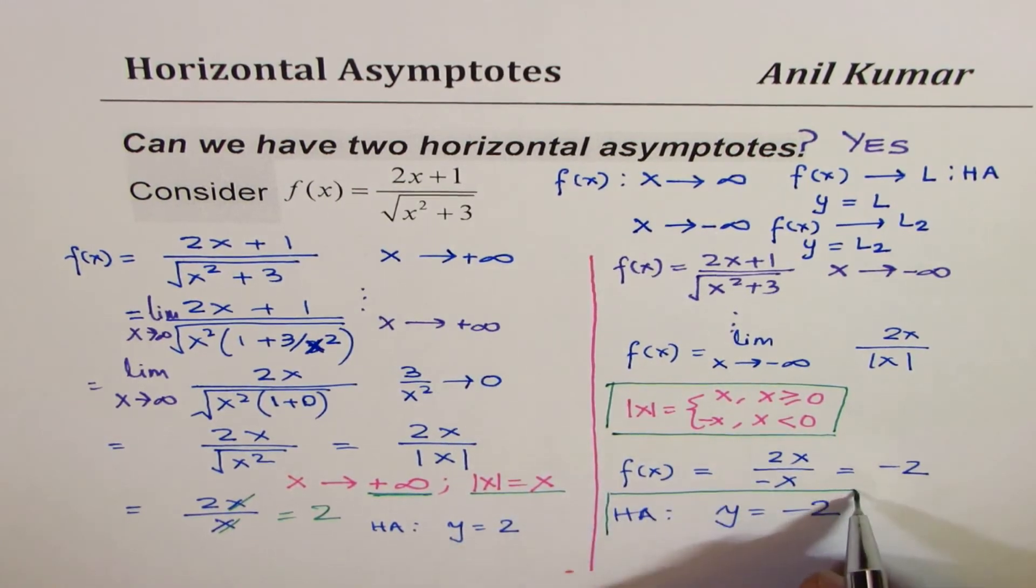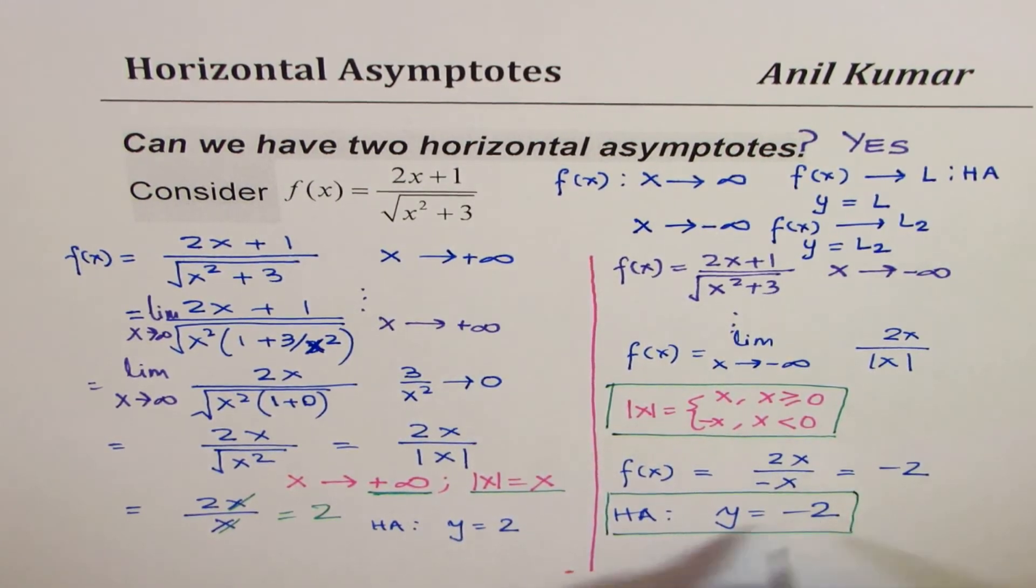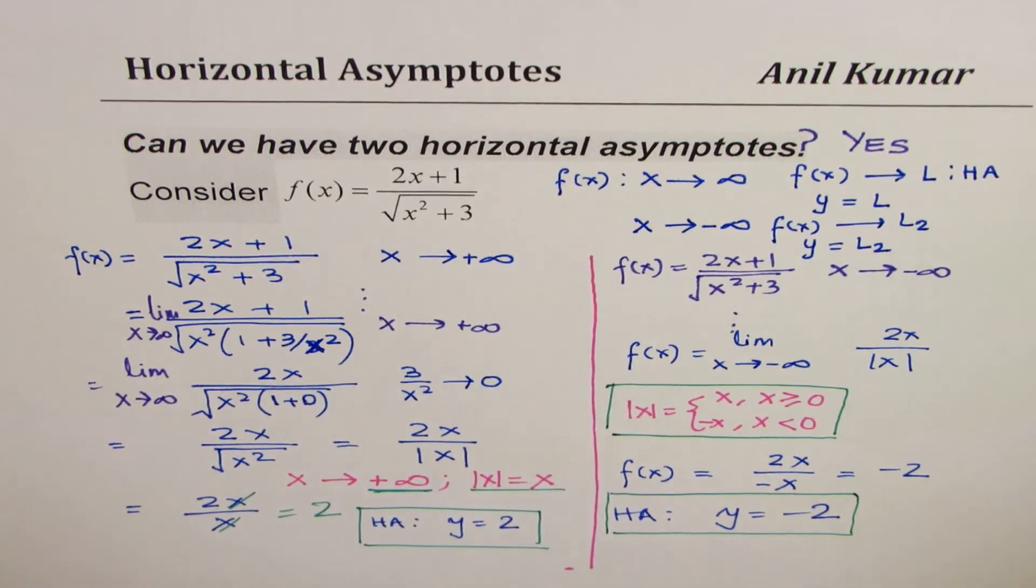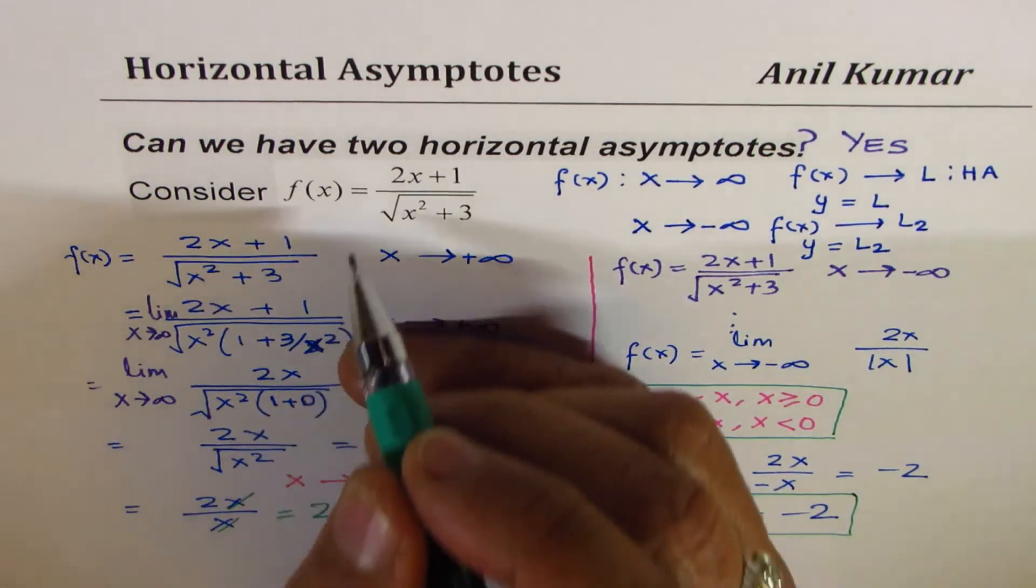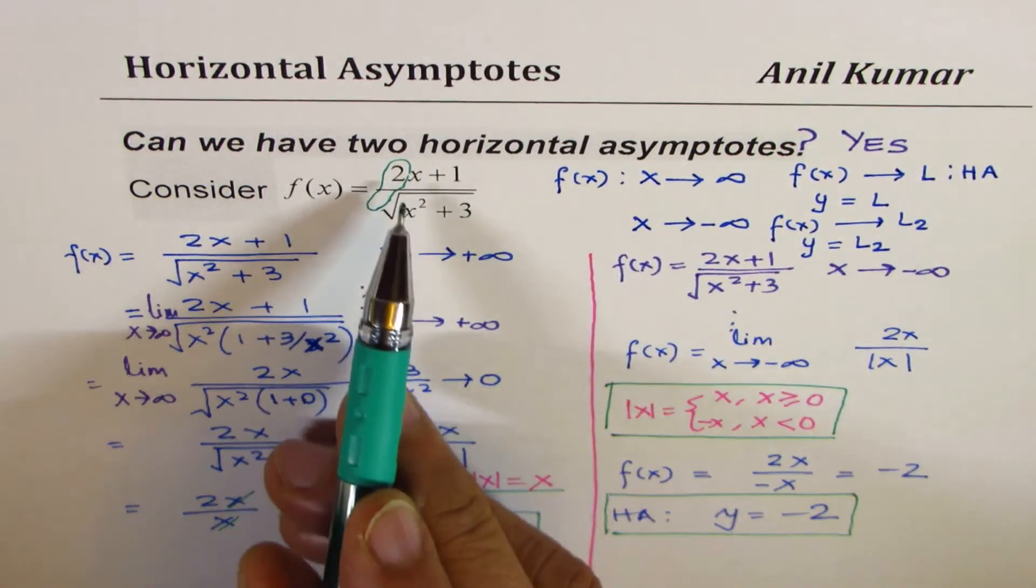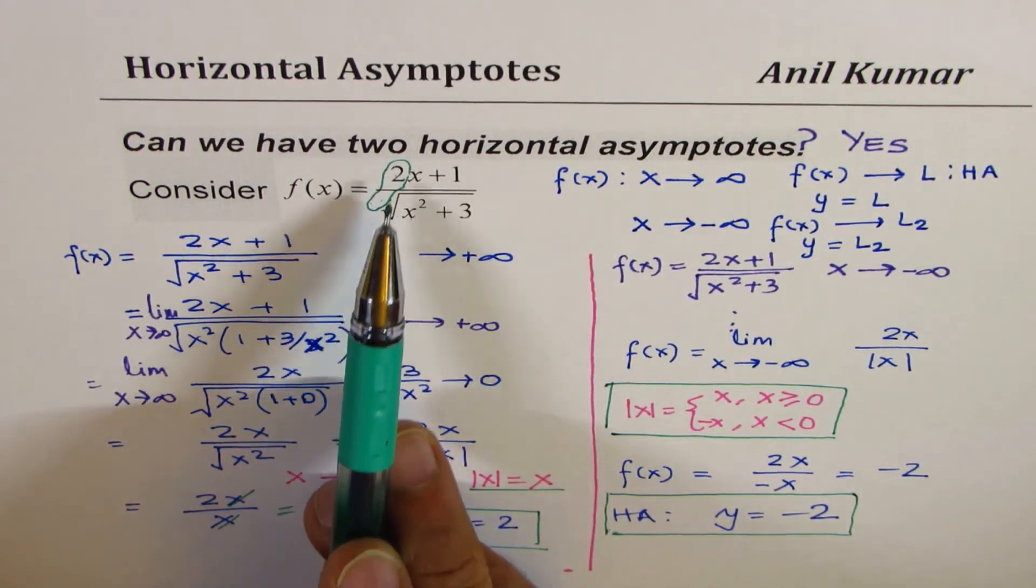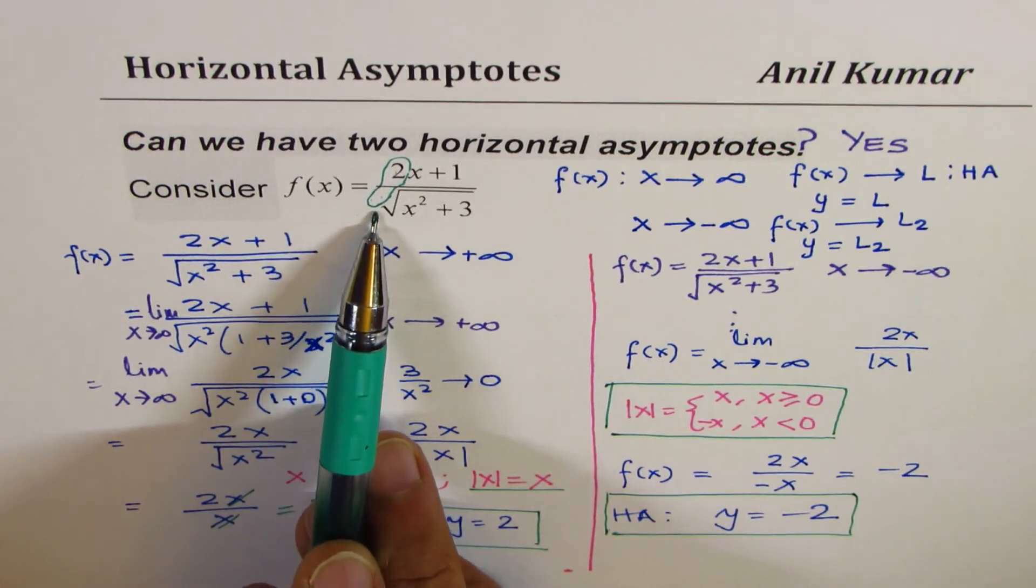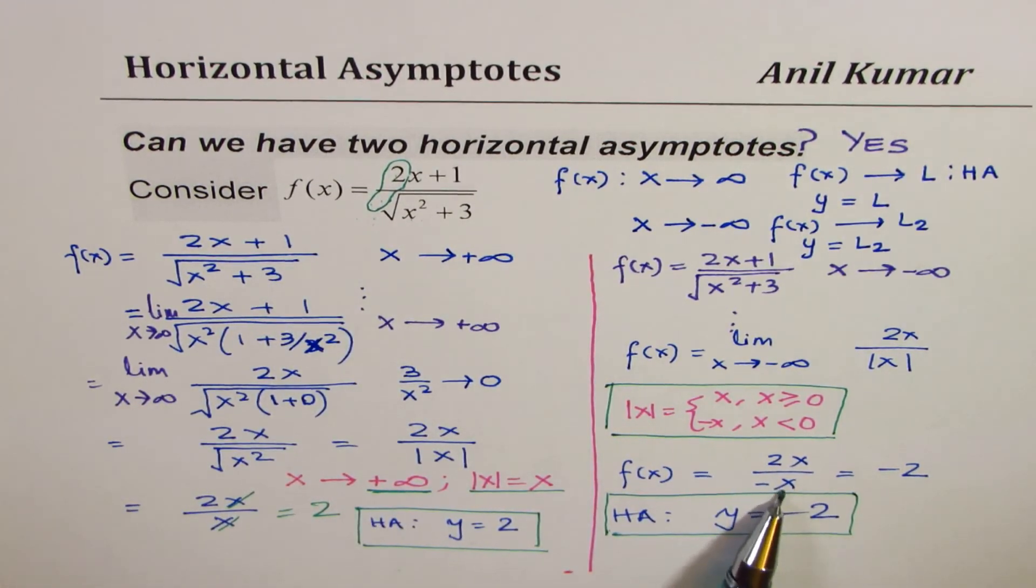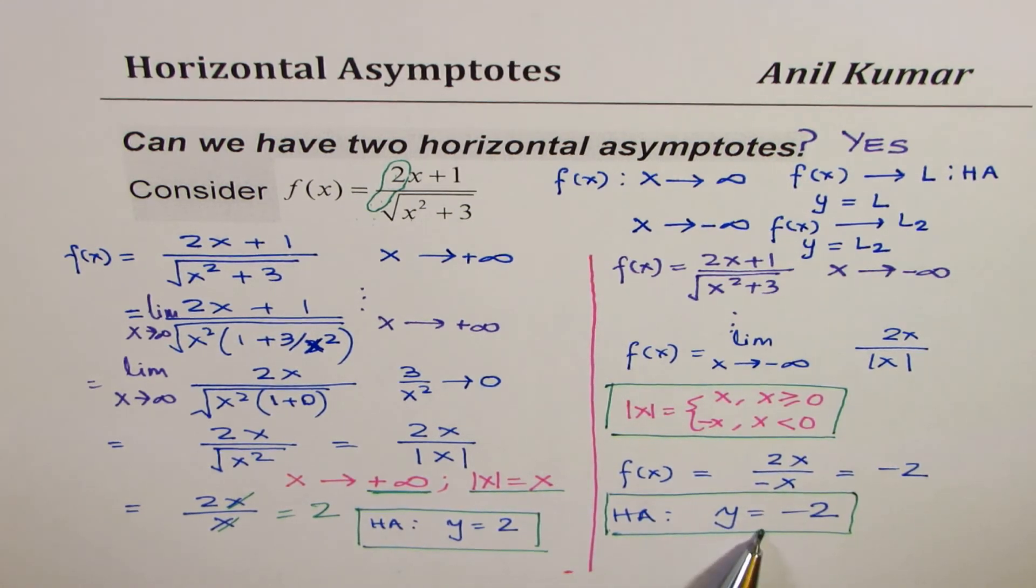So we have two different asymptotes: one minus 2, the other one is plus 2. I hope that's very easy to understand. Now it is ratio of leading coefficients basically, so 2 over what. Since I take it out as an absolute value, it is definitely 2, but absolute x could be positive or negative depending on how you define it. That gives you two different equations for horizontal asymptote. So that is how you can understand.